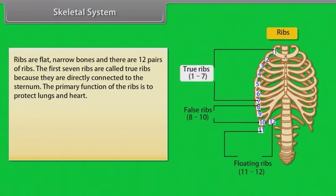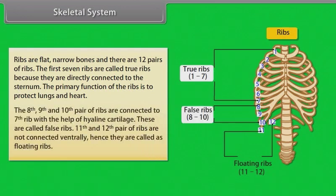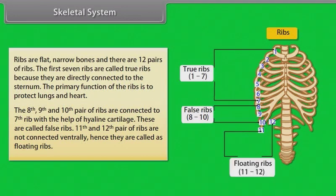Ribs are flat, narrow bones and there are twelve pairs of ribs. The first seven ribs are called true ribs because they are directly connected to the sternum. The primary function of the ribs is to protect the lungs and heart. The eighth, ninth, and tenth pairs of ribs are connected to the seventh rib with the help of hyaline cartilage — these are called false ribs. The eleventh and twelfth pairs of ribs are not connected ventrally, and hence they are called floating ribs.